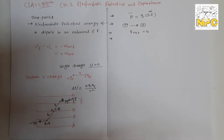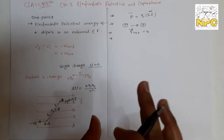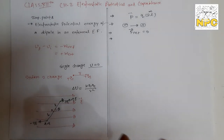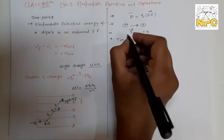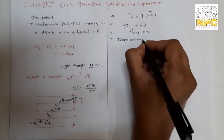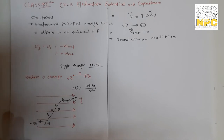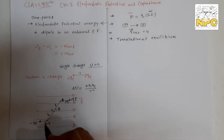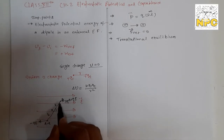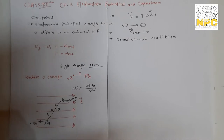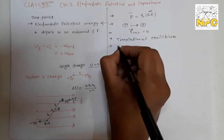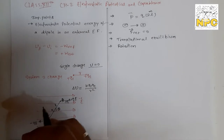Net force on the dipole is zero when placed in a uniform electric field. This means the body is in translational equilibrium — it cannot move forward, backward, up, or down. However, points A and B are not on the same line of action, so when the two forces are not along the same line, rotational motion will occur.